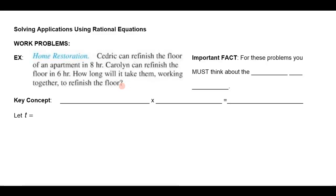The first inclination of most students is to just add these together and get 14 hours, and then quickly you realize that no, it certainly shouldn't be 14 hours. The next inclination is to just average these and say maybe seven hours, but then you realize it really ought to be less than six hours — even if Carolyn did it herself it would be six hours and she's getting help. The reason these seem counterintuitive is that we're thinking in terms of total time instead of the rate of work.